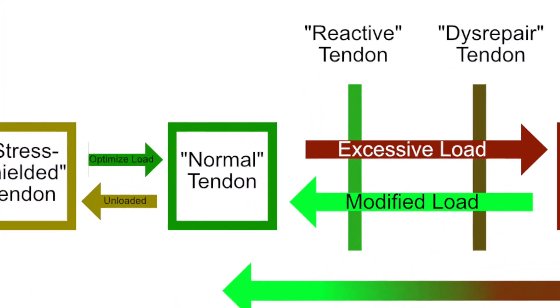As a tendon gets stronger, it becomes stiffer, not thicker. It's important to note that because it's the opposite of what happens to, say, a muscle.